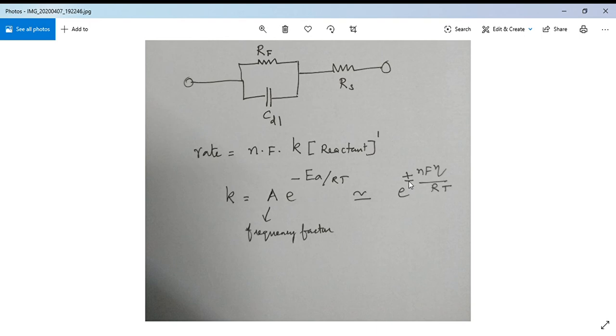Since eta will have a sign, irrespective of whether it's reduction or oxidation, as eta increases in magnitude, this exponential term will go up. As the exponential term's value increases with eta, k will go up. If k goes up, the rate of the reaction goes up. As I told you, the resistance is inversely proportional to this rate constant, so rate constant increase means resistance is coming down.